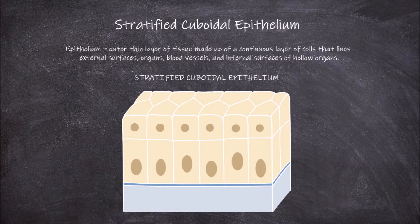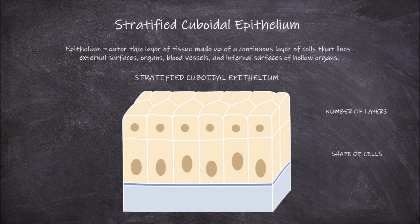These can be distinguished based on a mixture of the number of layers of cells the epithelium is made up of, and the shape of the epithelial cells. When the epithelium consists of two or more layers of epithelial cells, this is called stratified.